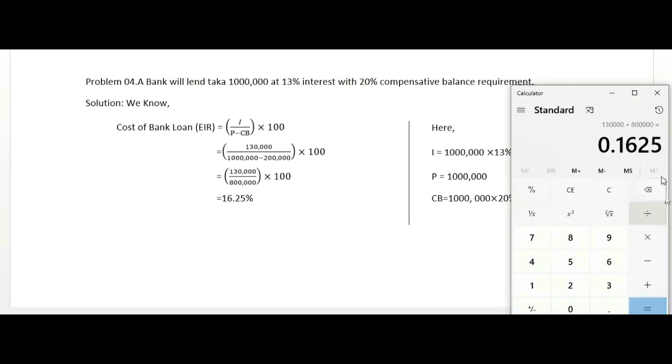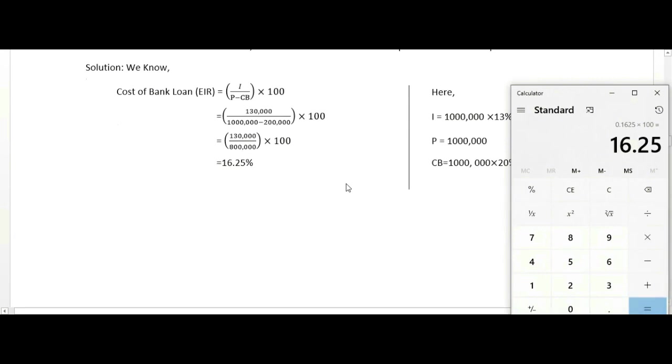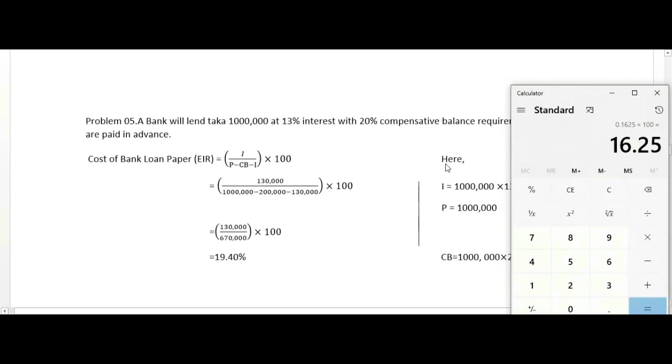The result is 0.16258, which equals 16.25 percent when multiplied by 100. So the answer is 16.25 percent.